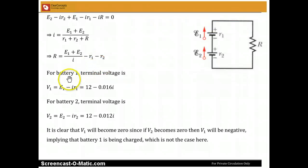Now for battery 1, the terminal voltage is V1 equals E1 minus IR1, as I mentioned earlier, and plugging in the values that is 12 minus 0.016i.